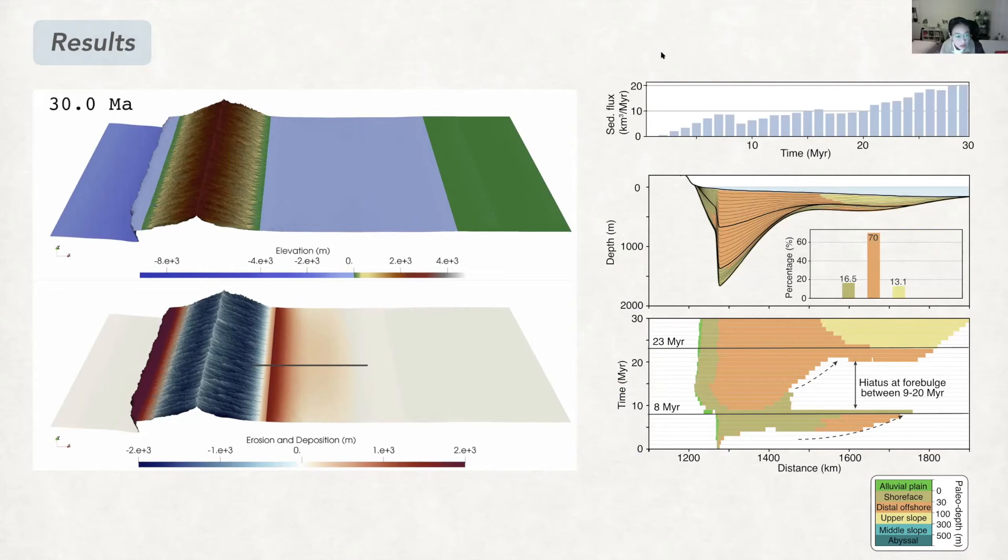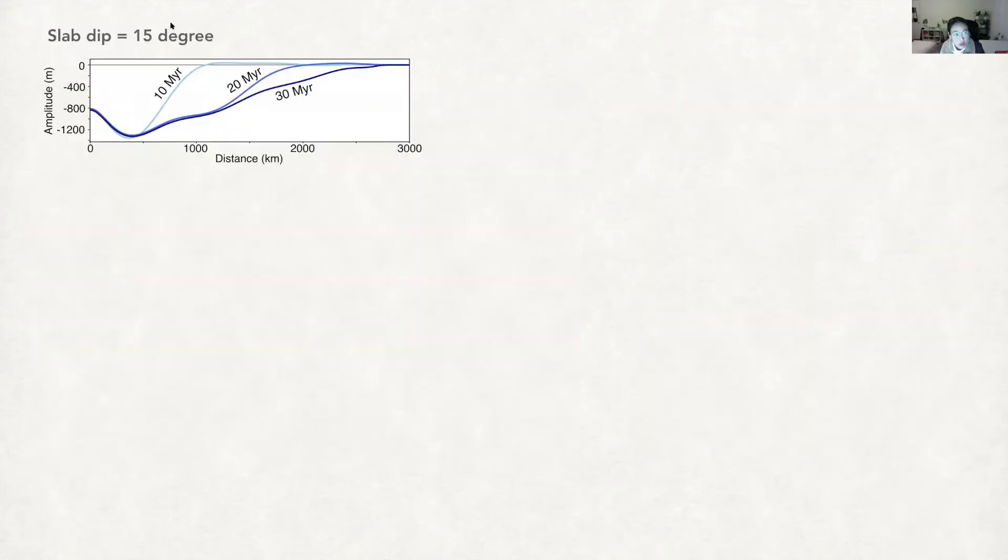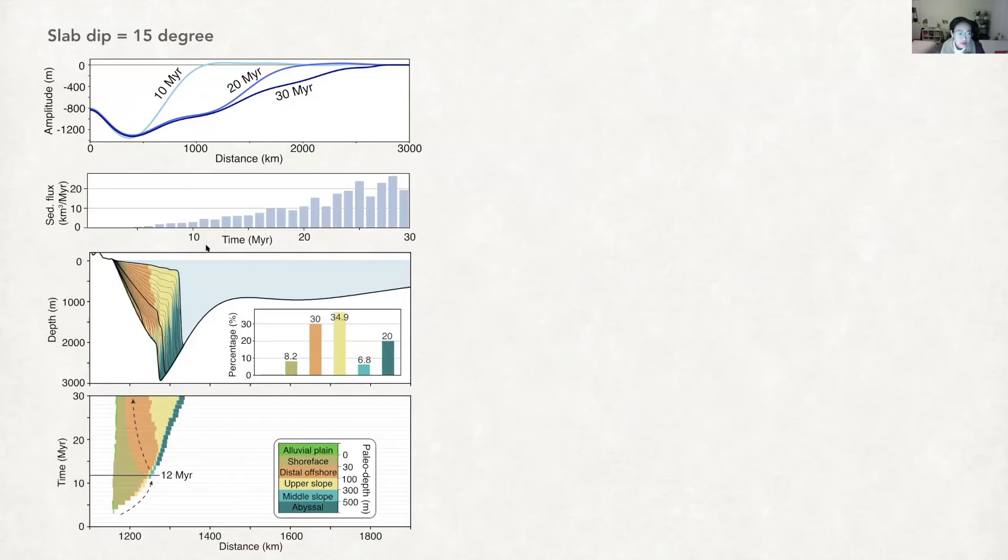So what happens if we change the slab dip? If we change it to a more shallow dip angle, we can see that it generates a higher amplitude of the subsidence and also a faster lateral migration of the subsidence. Also because of this high amount of subsidence, the foredip zone is underfilled. Therefore there are no sediments across the forebulge and also the back bulge.